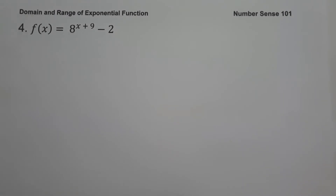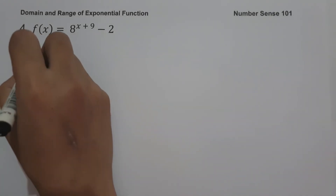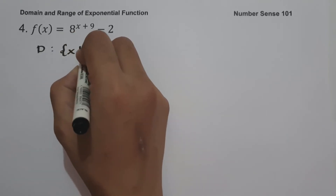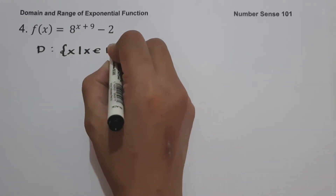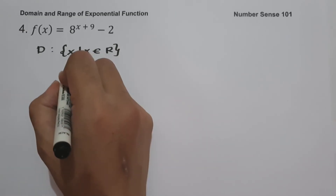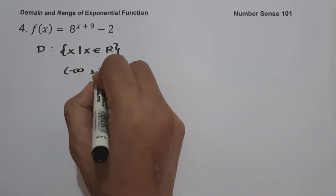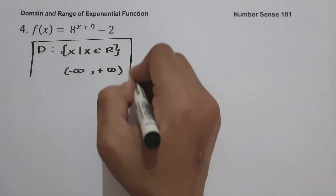On example number 4: f(x) = 8 raised to x plus 9 minus 2. The domain is the set of x values such that x is the set of all real numbers, or in interval notation, from negative infinity up to positive infinity.